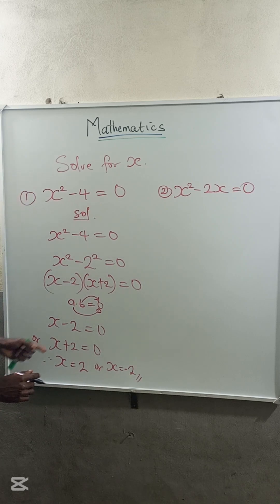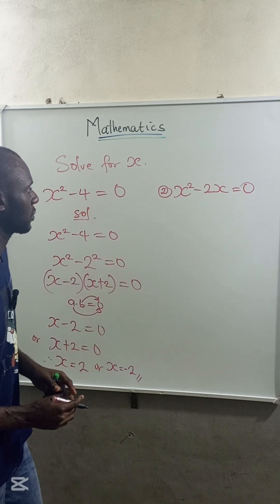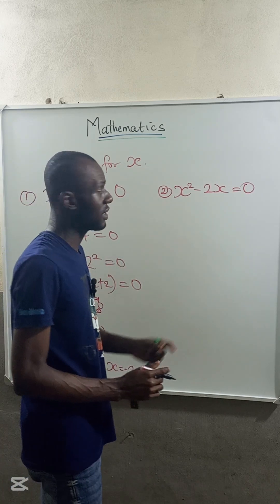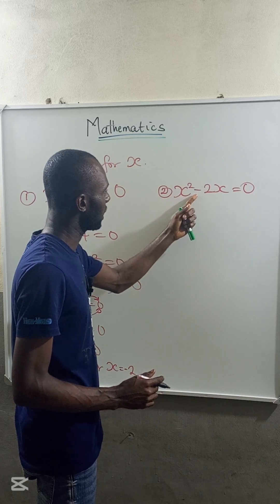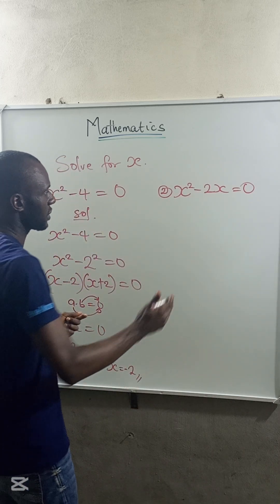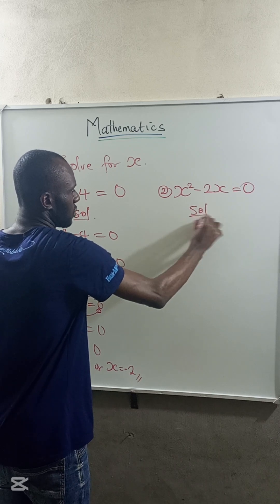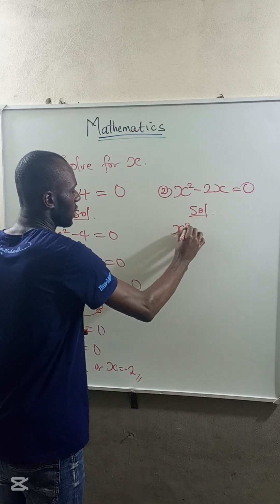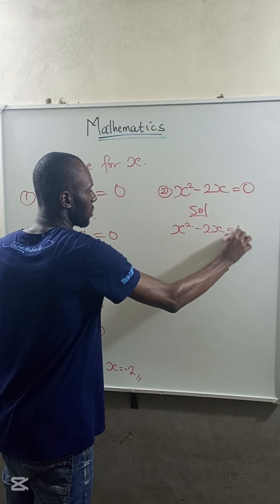Now, let's solve the second question. We are given that x squared minus 2x is equal to 0. So the first thing we do is to write down our solution. So we have it that x squared minus 2x is equal to 0.